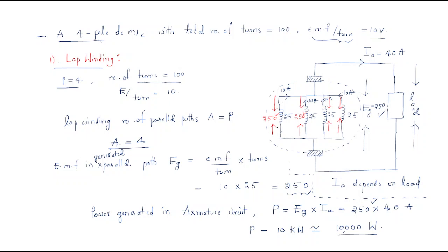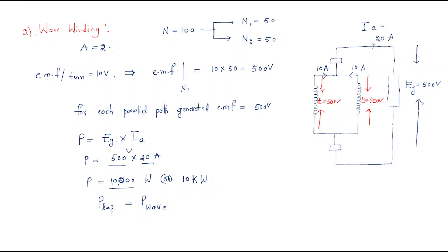In lap winding there are four parallel paths, so the 100 turns are divided into four parts, giving 25 turns each. In wave winding there are only two parallel paths, so turns are divided into two parts of 50 turns each, generating 500 volts EMF. For 10 kilowatts load, each parallel path carries 10 amps and the total current is 20 amps.